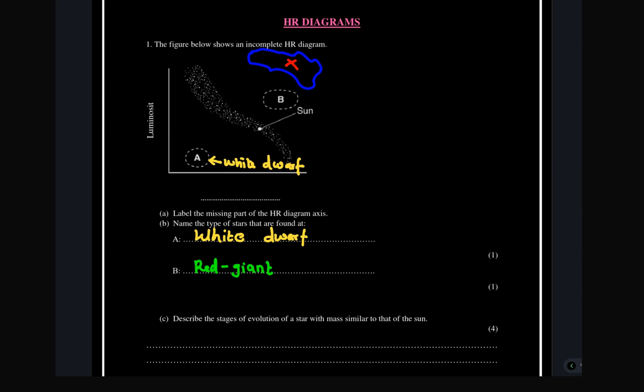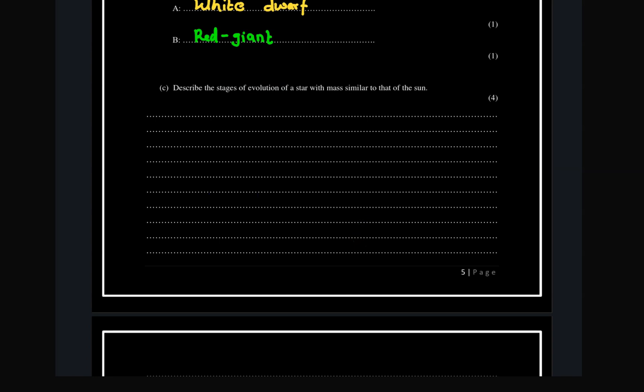We are also supposed to label the missing part of the HR diagram axis. This axis is color. Remember: blue stars are hot, but red and yellow stars are cool stars. You need to remember that.